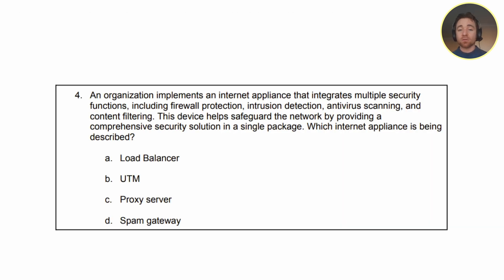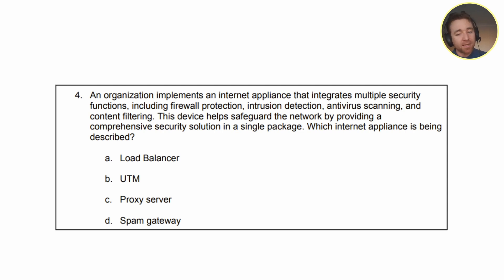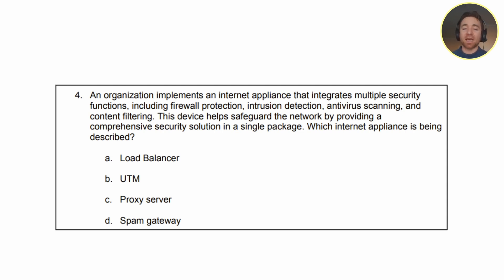The next question from exam objective two reads: an organization implements an internet appliance that integrates multiple security functions, including firewall protection, intrusion detection, antivirus scanning, and content filtering. This device helps safeguard the network by providing a comprehensive security solution in a single package. Which internet appliance is being described? A, a load balancer. B, a UTM. C, a proxy server. Or D, a spam gateway?